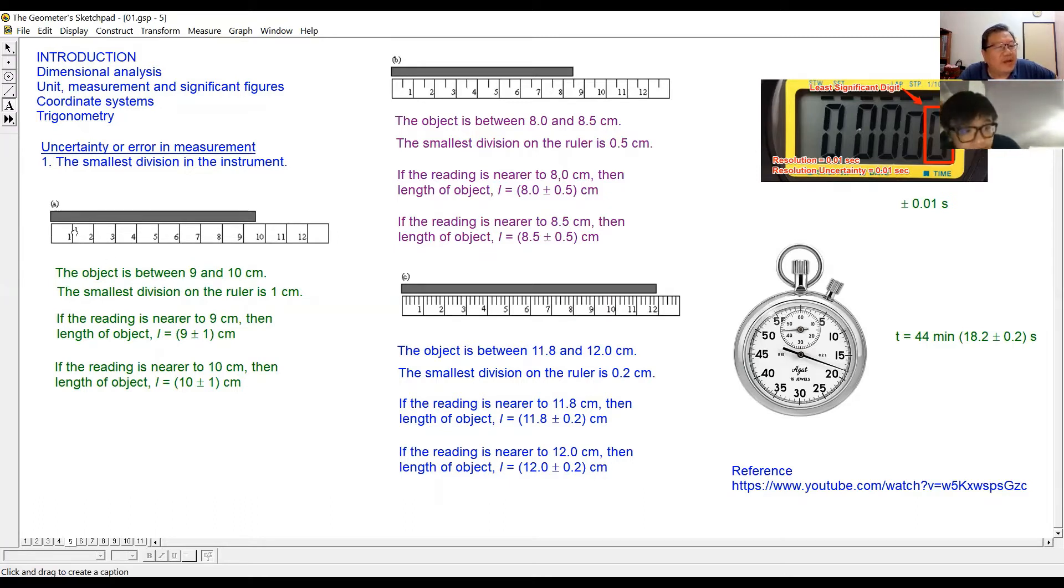Now you look at this ruler here. Each of this marking is 1 cm. What is the smallest division here? The smallest spacing, how much is the smallest spacing? One. Correct, so the smallest spacing is 1 cm.